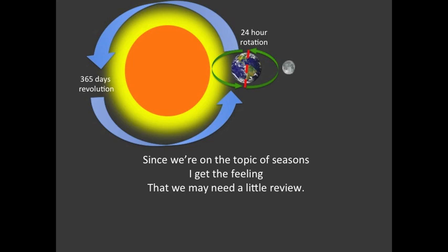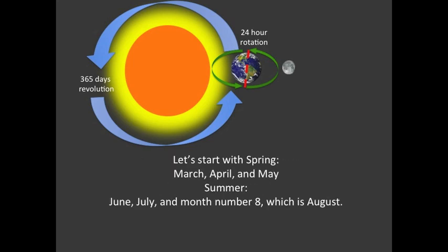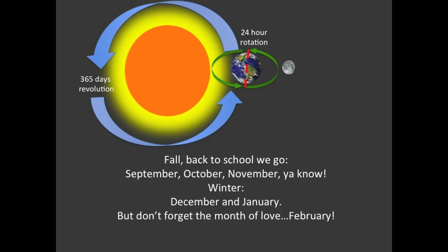Since we're on the topic of seasons, let's do a little review. Spring: March, April, and May. Summer: June, July, and August. Fall, back to school: September, October, November. Winter: December and January — but don't forget the month of love.